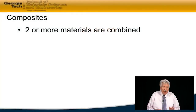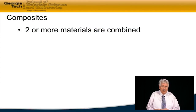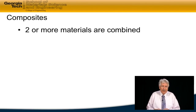Composites are made up of two different materials that are combined. The idea is to take material A and material B and put them together in such a way that the combination results in a property which is better than either of the individual materials by themselves.